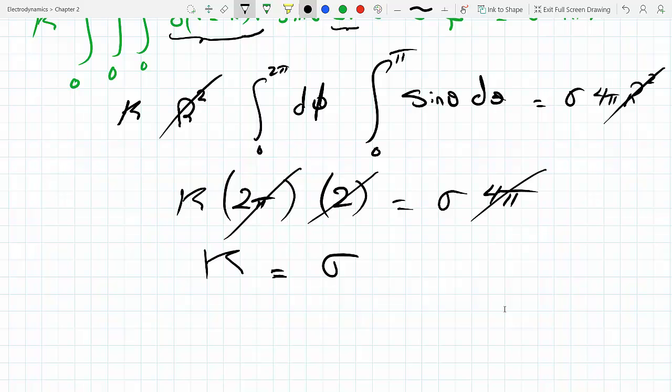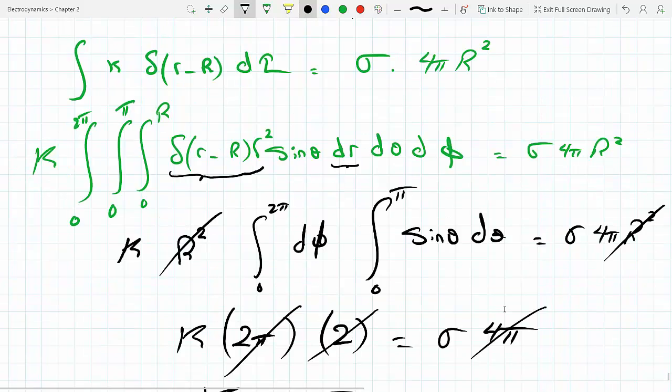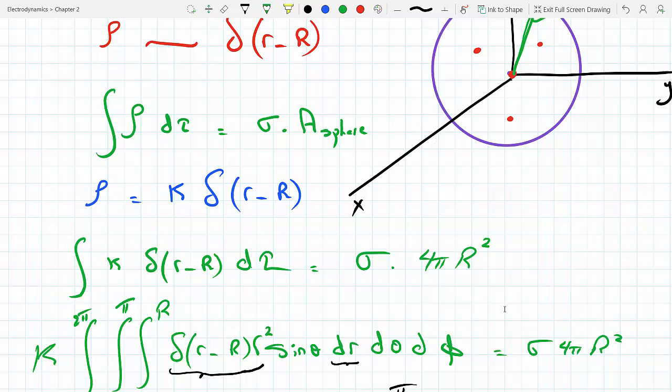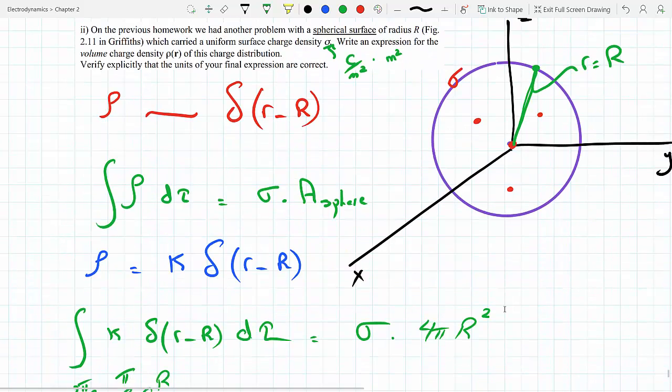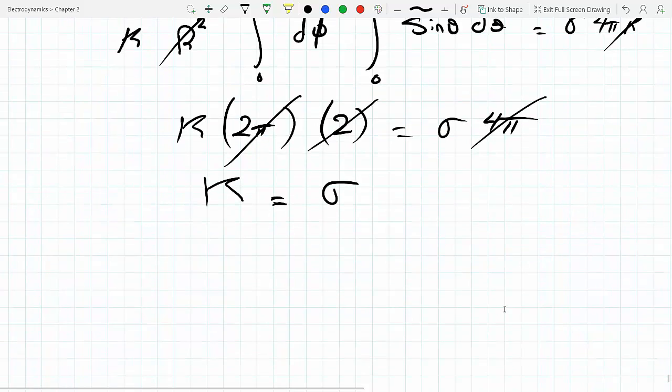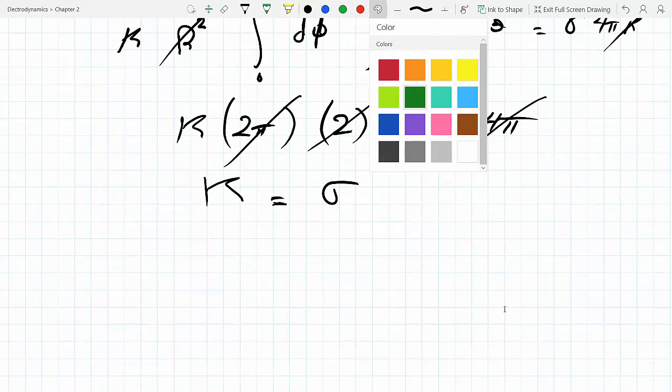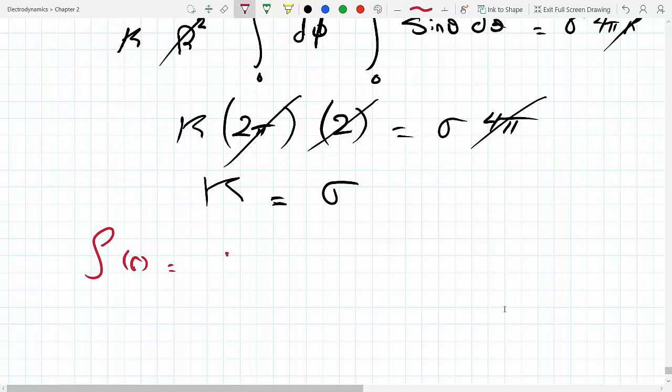So now plug that into the rho function, rho, because we are being asked what rho R is. So that means rho R is equal K, which turned out to be sigma, times delta R minus capital R.